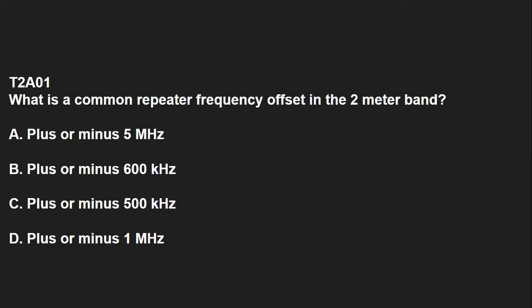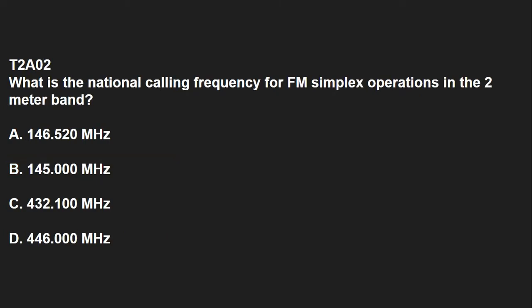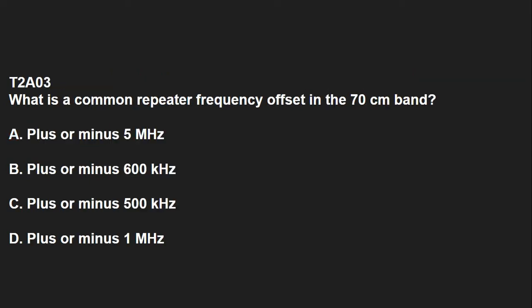T2A01: What is the common repeater frequency offset in the 2-meter band? That answer is plus or minus 600 kHz. T2A02: What is the national calling frequency for FM simplex operations in the 2-meter band? The answer is 146.520 MHz. T2A03: What is the common repeater frequency shift or frequency offset in the 70-centimeter band? Plus or minus 5 MHz.